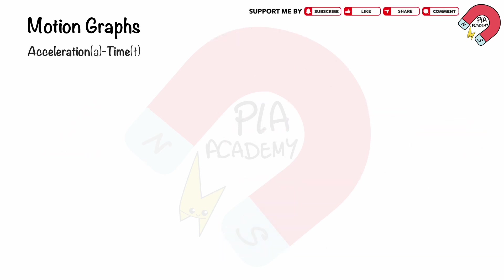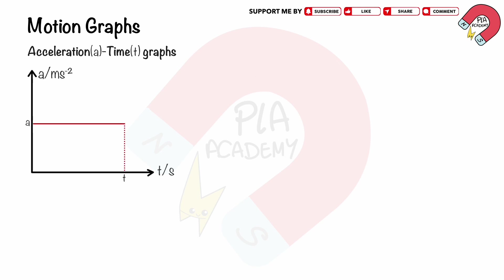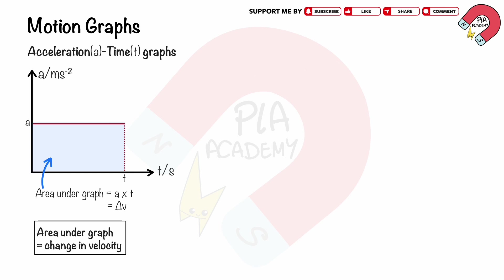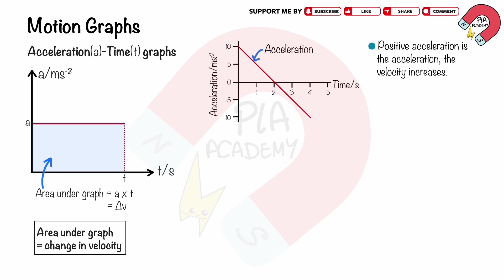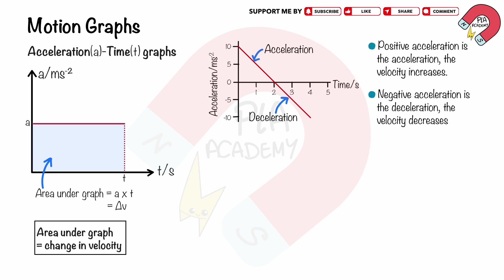An acceleration-time graph shows how an object's acceleration changes over time. The area under the graph is acceleration a multiplied by time t, which equals the change in velocity Δv. So the area under the acceleration-time graph is change in velocity, while its gradient has no physical meaning. A positive acceleration means the velocity increases; a negative acceleration means the velocity decreases. If the acceleration is zero, the object moves with constant velocity.